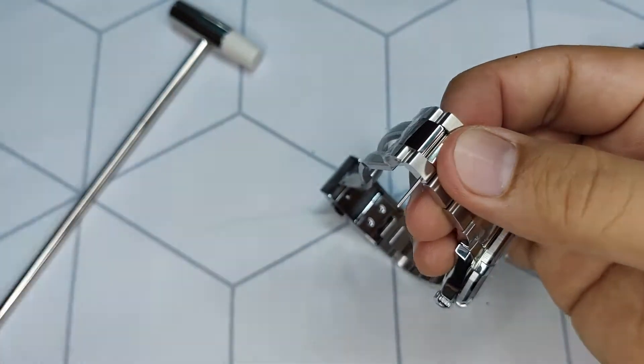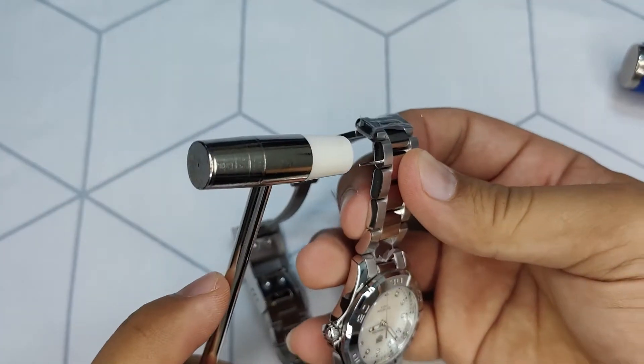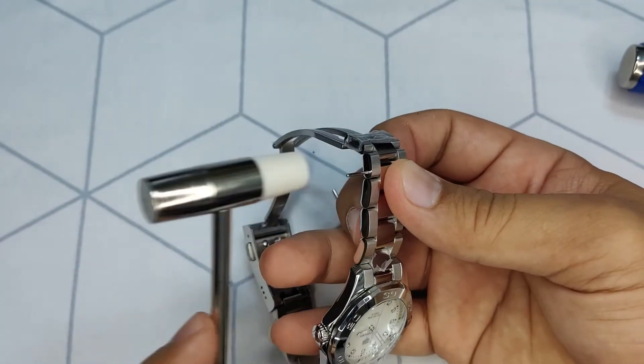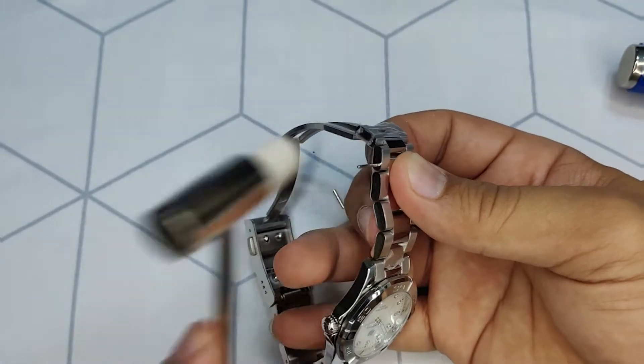Failing to do so will bend and damage the pin. Then strike the pin using the plastic side of the watch hammer to avoid dents or scratches on your watch.